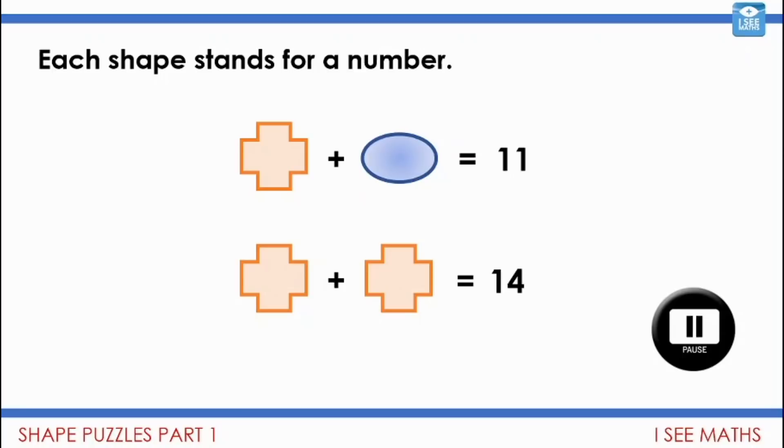Well, let's have a think. If we look at just that bottom line, then we can see that two crosses make 14. So each one must be worth seven. Seven and seven, of course, is 14. And that means that this cross must also be worth seven. So the oval, well, it must be now worth four.